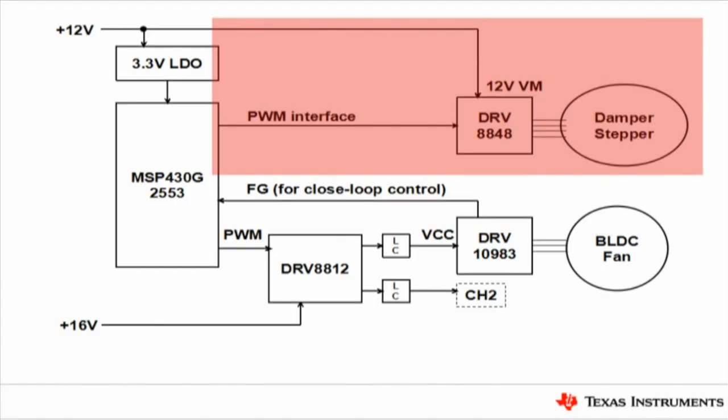Let's take a look at each module. First, the damper control. DRV8848 works up to 18V, making it ideal to drive DC and stepper motor in white goods. In this damper application, which is a stepper motor, full and half-step control can be easily realized by PWM input pins.